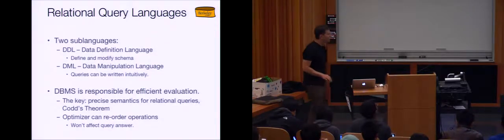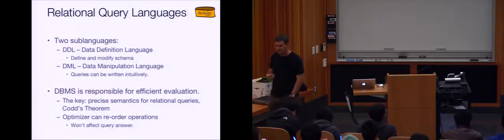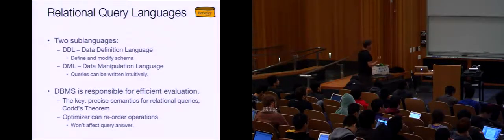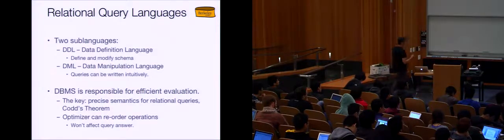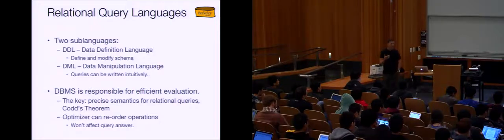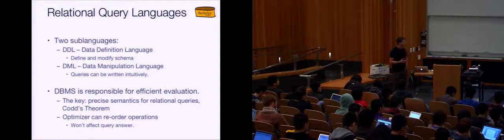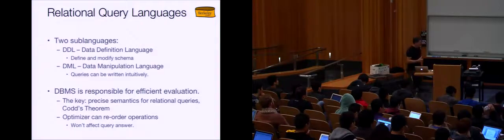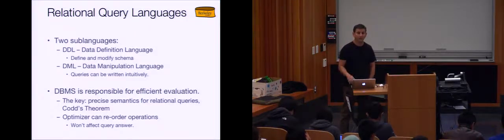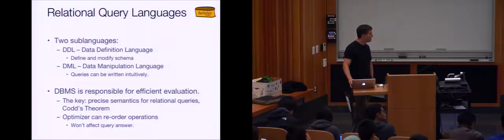The database management system is responsible for efficient evaluation of these declarative queries. The key to being able to do this is Codd's theorem, which pointed the way toward the idea that you could unambiguously map from a declarative query to one of many possible operational plans. The optimizer is free to reorder operations in these plans without affecting the query answer, and the rules for those optimizations will become clear over the next few weeks.